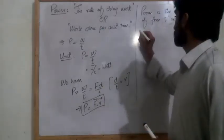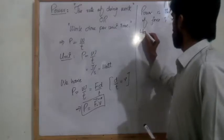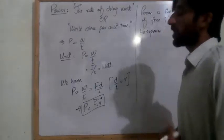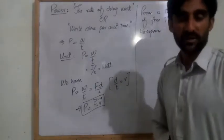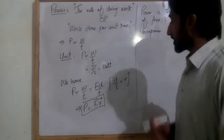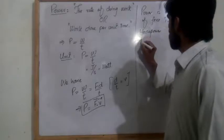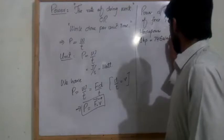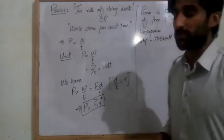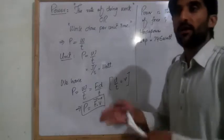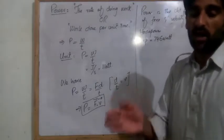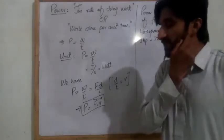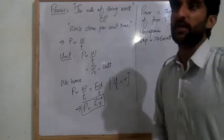That is called horsepower. Horsepower is also a unit of power. One horsepower is equal to 746 watts. So horsepower is a larger unit of power, just like megawatt or gigawatt are larger prefixed units.